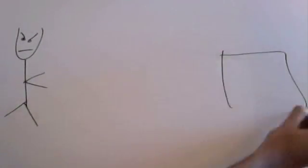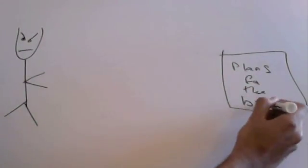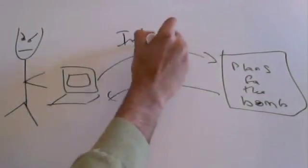Terrorists can't make HEU, but if they steal enough of it from government warehouses, they can find the plans for the bomb on the internet.